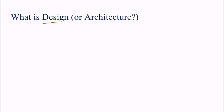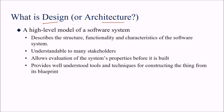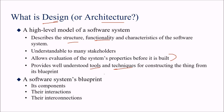There is a wide difference between design and architecture. Architecture — such as MVC or N-tier — is the structure showing components and their interrelationships. Design is a high-level model of a software system describing its structure, functionality, and characteristics. The design is understandable by stakeholders, allows evaluation of system properties before it is built, and uses well-understood tools and techniques — the software blueprint specifying components, their interaction, and interconnection.